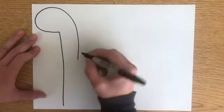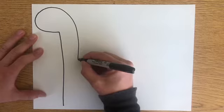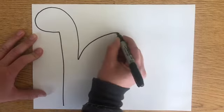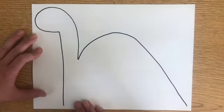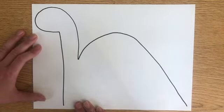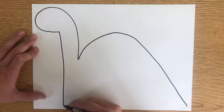From this step, you want to meet back up at your neck, make a nice rounded back, and go all the way almost to the very corner for your dinosaur's tail.